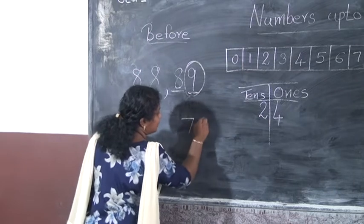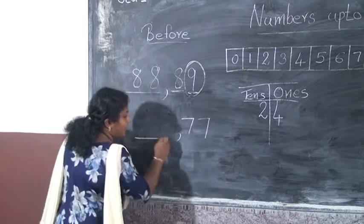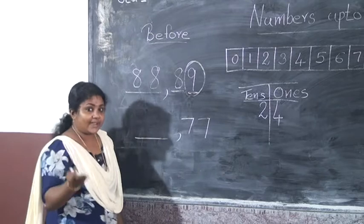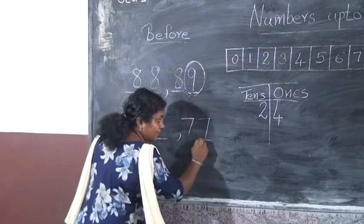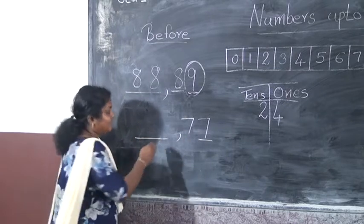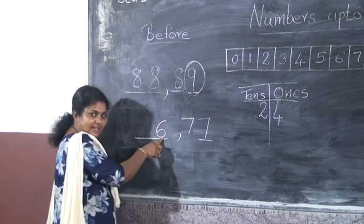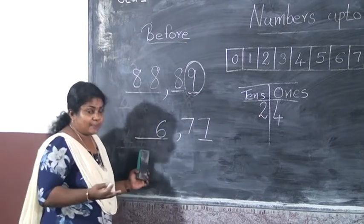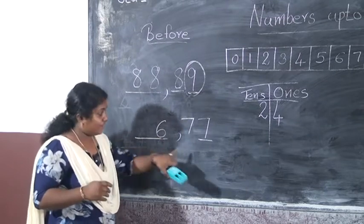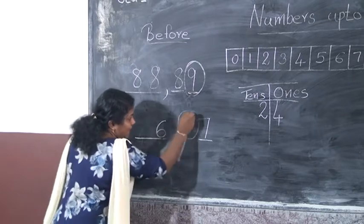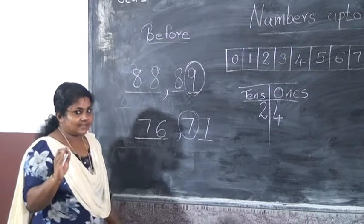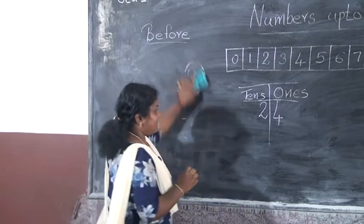And the next number: 77. Before number — you have to say it. I have explained how to write the before number. First look the 1s place — here it is 7. Before 7 is 6. And what will we write in the 10s place? We have to write 7. So the before number of 77 is 76. All understood.